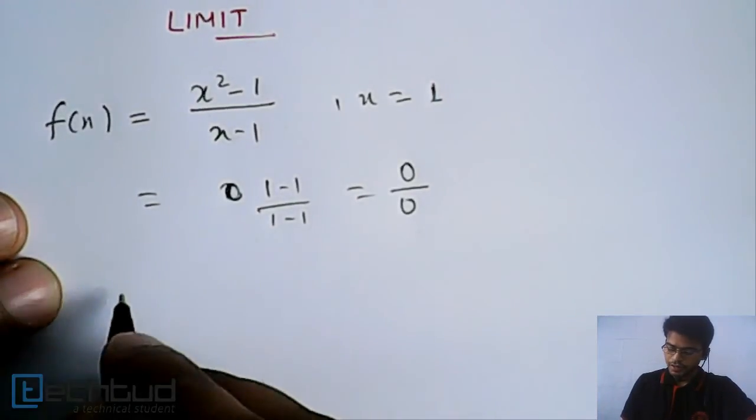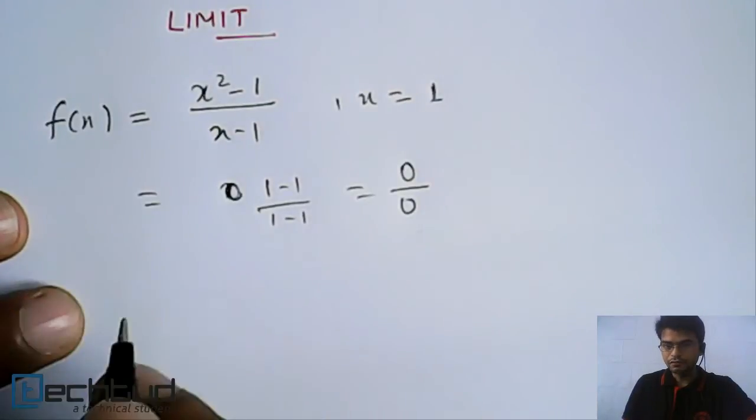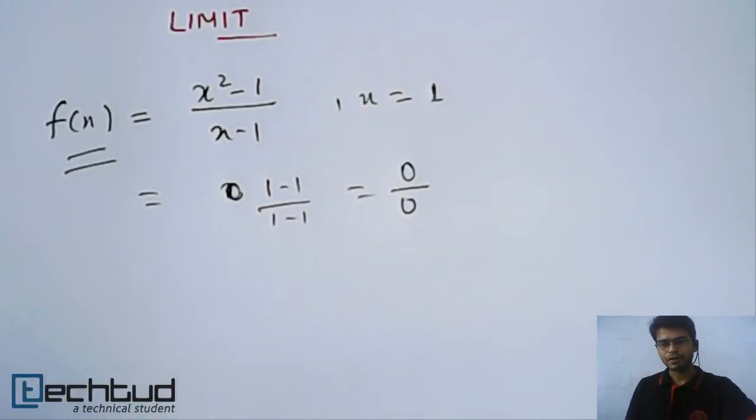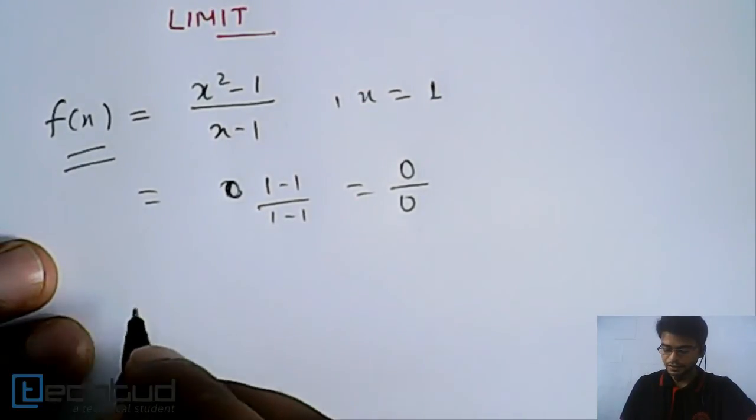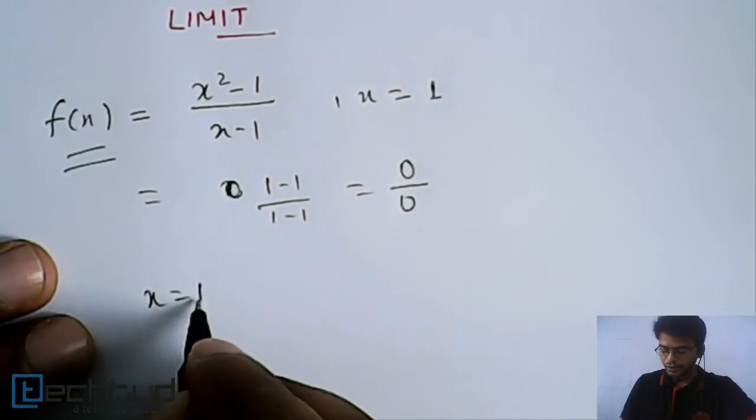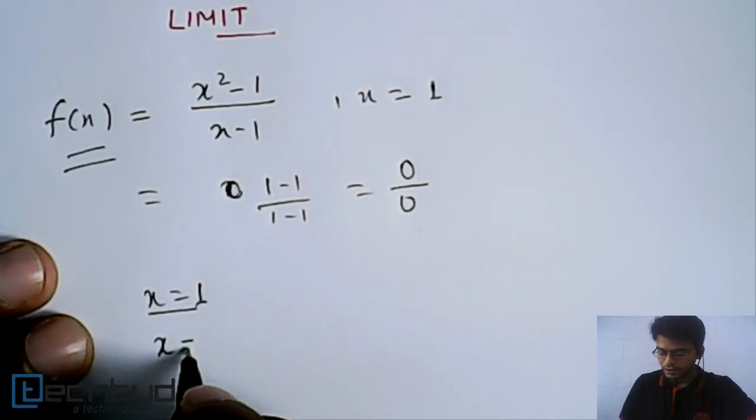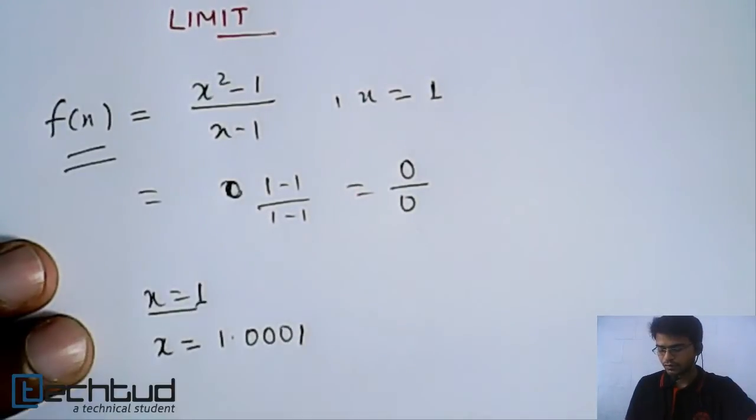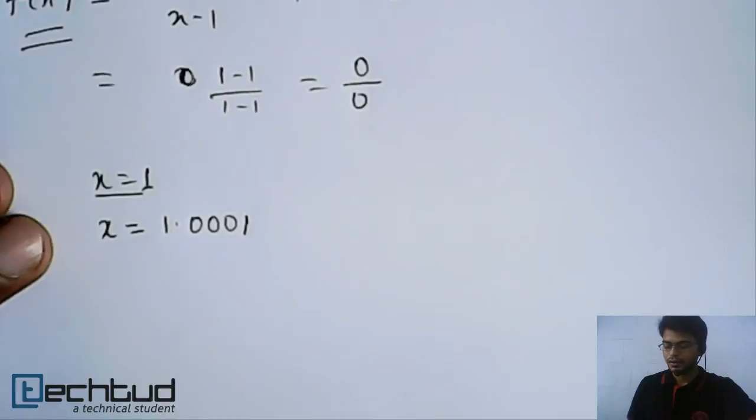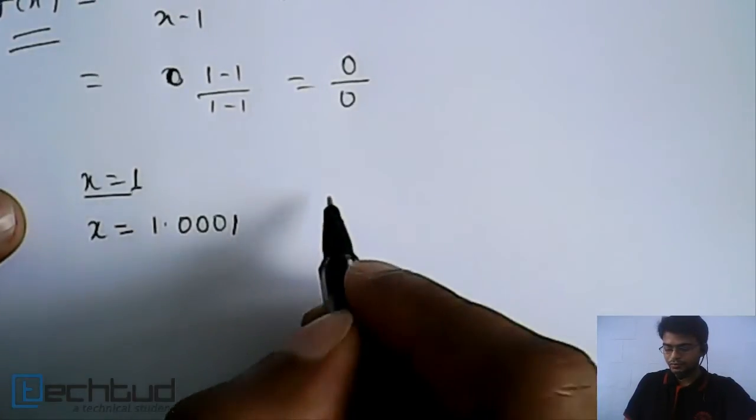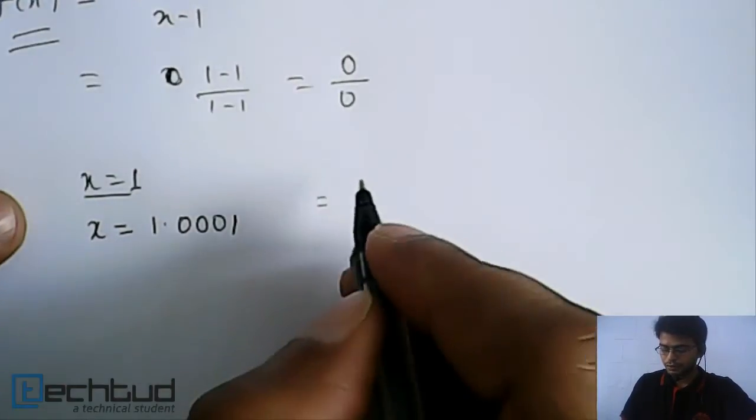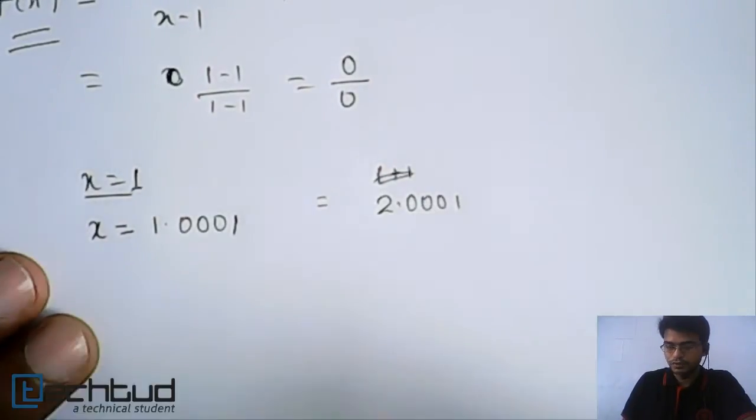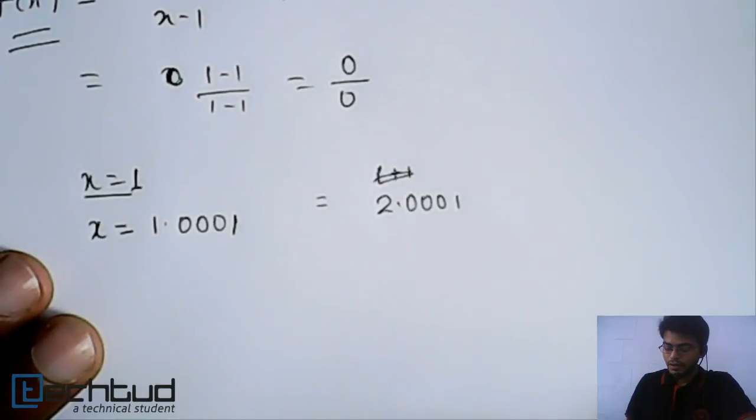But what do we say when somebody asks what is the value of this function f(x) just neighborhood point of this x? For example, x equal to 1, it is not defined. But at x equal to 1.0001, what will be the value? So now if you try to find out the value, it will be somewhat equal to 2.0001, 2 like this.